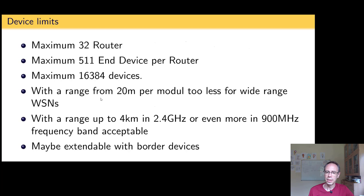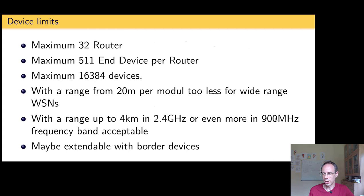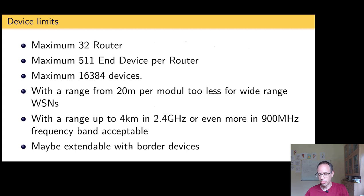With a range up to 4 kilometers per module using an amplifier outdoors, it's already quite a lot. With 900 MHz modules you could reach even farther. Thread is defined for 2.4 GHz by IEEE, but implementing 900 MHz is still possible as it's defined in IEEE 802.15.4. So the possibility for a wide-range network is there, and you can also extend Thread by connecting two Thread networks via a border device.